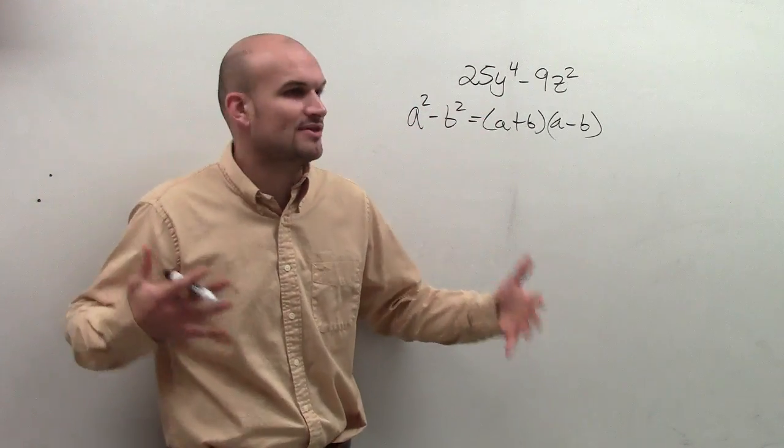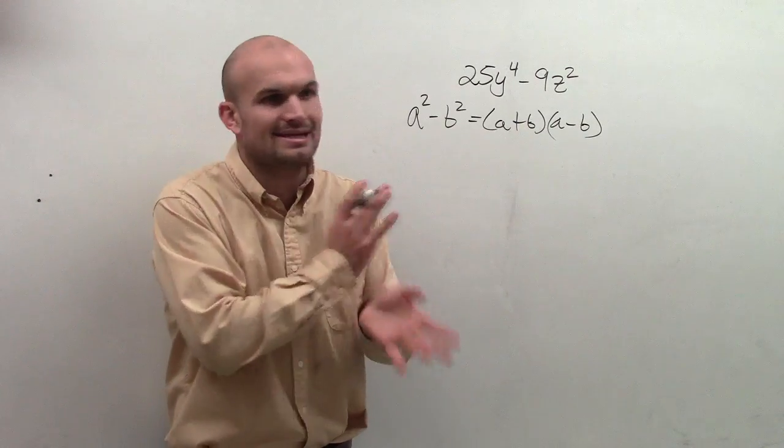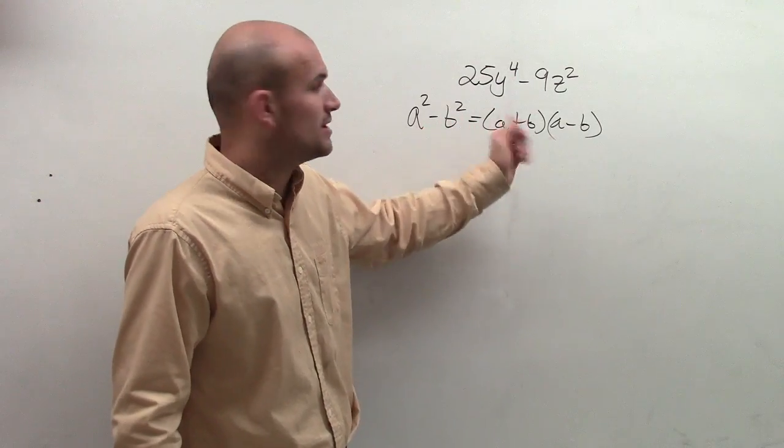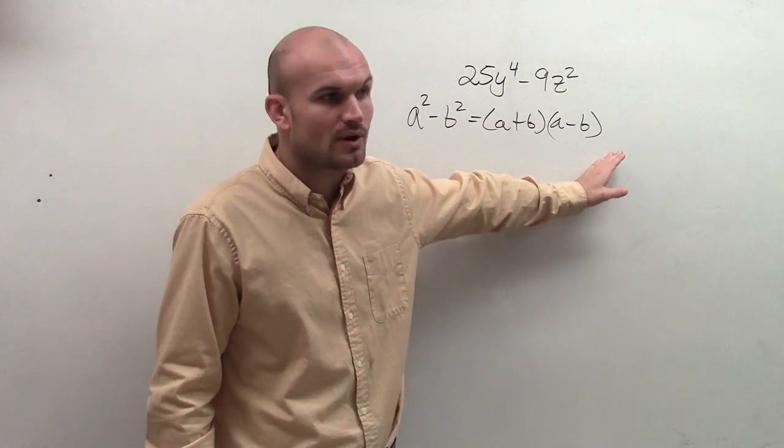...you don't need to think about the factoring part and doing the AC and box method and all those kinds of stuff. You just know if you have a square number minus another square number you can write it like that.